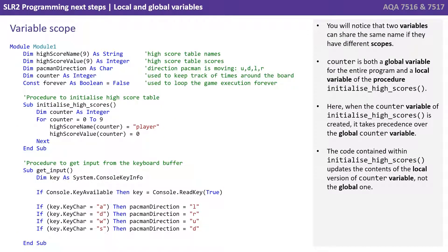You will notice that two variables can share the same name if they have different scopes. Counter is both a global variable for the entire program and a local variable of procedure initialize high score. When the counter variable of initialize high score is created, it takes precedence over the global counter variable. The code contained within initialize high score updates the contents of the local version of counter, and not the global one.